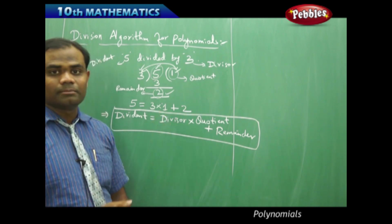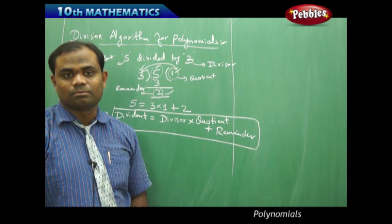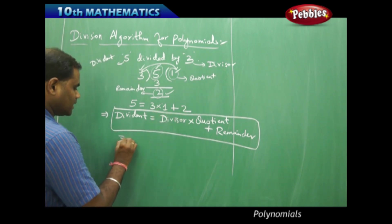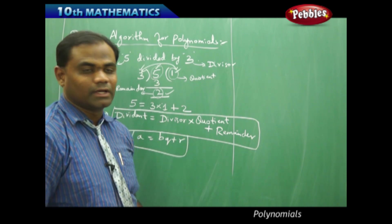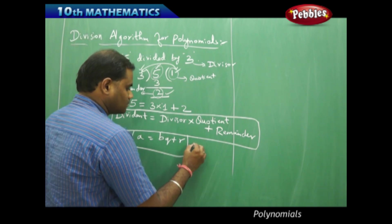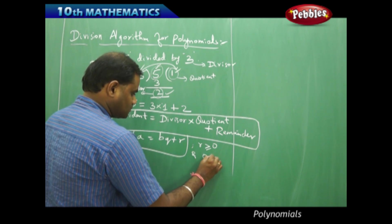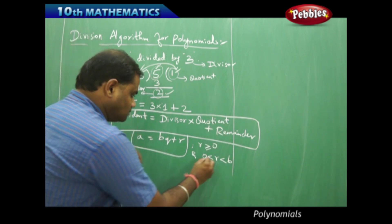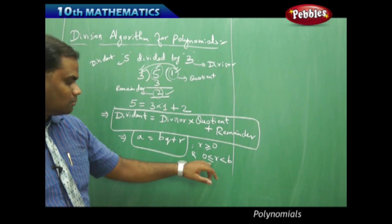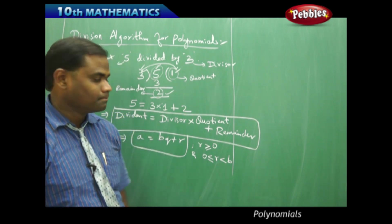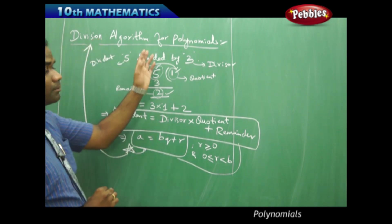Let's see if this division algorithm applies even for polynomials. This is also read as a = bq + r, which is how we understand the division algorithm, where r is greater than or equal to 0 and 0 less than r less than b. The remainder is always less than b and at the most greater than or equal to 0 but cannot be negative. This forms the division algorithm for numbers.